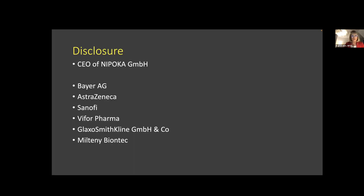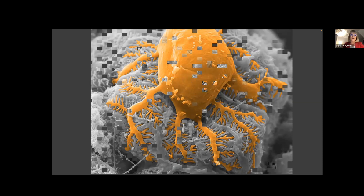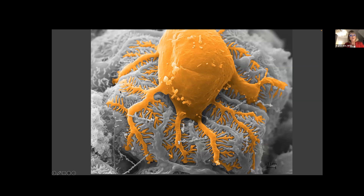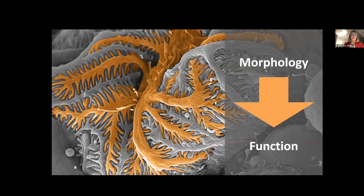Here is my disclosure. In this scanning electron microscopic image, you can see the podocyte covering the outer aspect of the capillary. This morphology — with the tiny foot processes and the interdigitation with the neighboring cells forming the slit membrane — is highly important for the function. Only this excellent interdigitation is responsible for the size selectivity of the filtration barrier. In between the interdigitating foot processes, you will see the slit membrane.